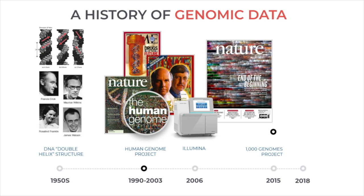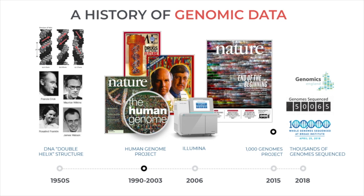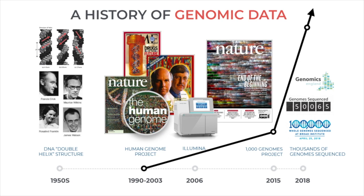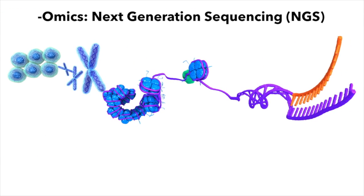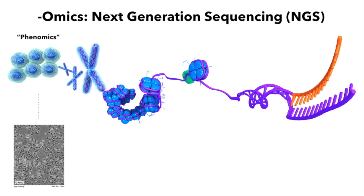Today, there is an ever-increasing number of genomic, transcriptomic, proteomic and metagenomic data sets available that describe subcellular processes with highly detailed digital data. The Omics technologies are used to explore the roles, relationships and actions of the various types of molecules that make up the cells of an organism.